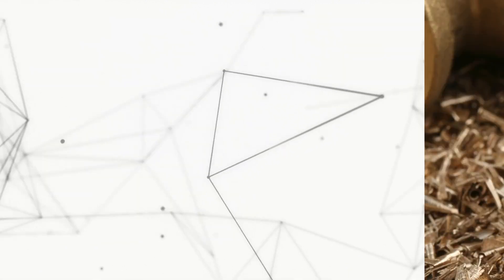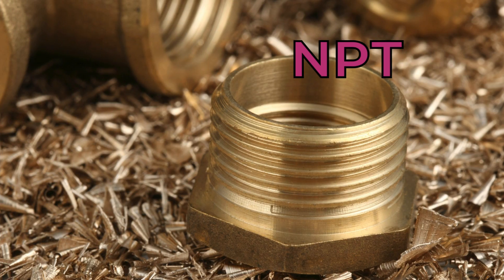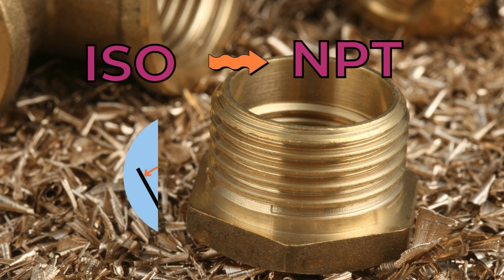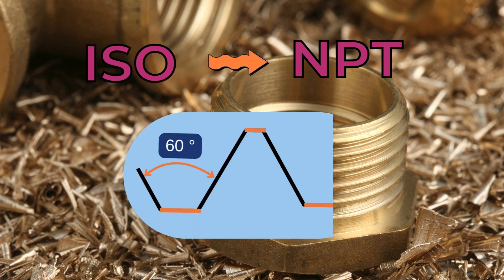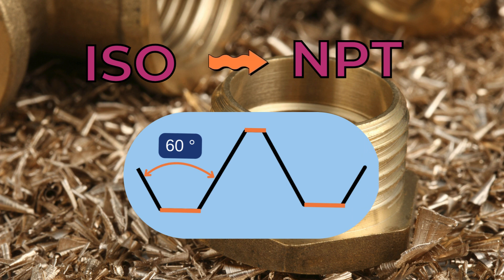So, what is the difference in terms of geometry? The basic thread profile of NPT threads is based on the ISO standard and features a 60-degree profile angle with flat truncations.